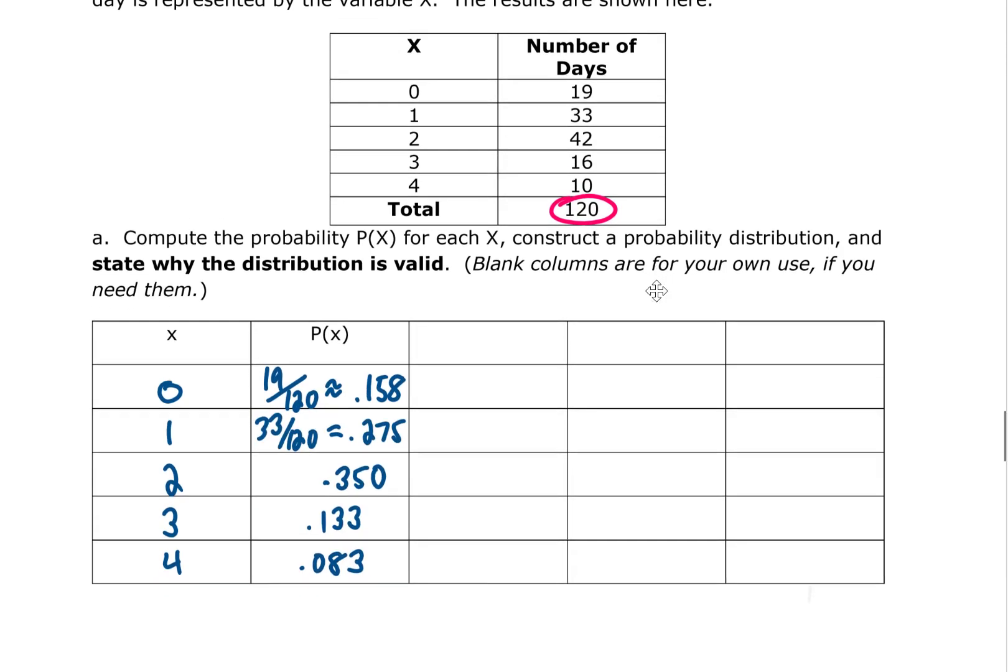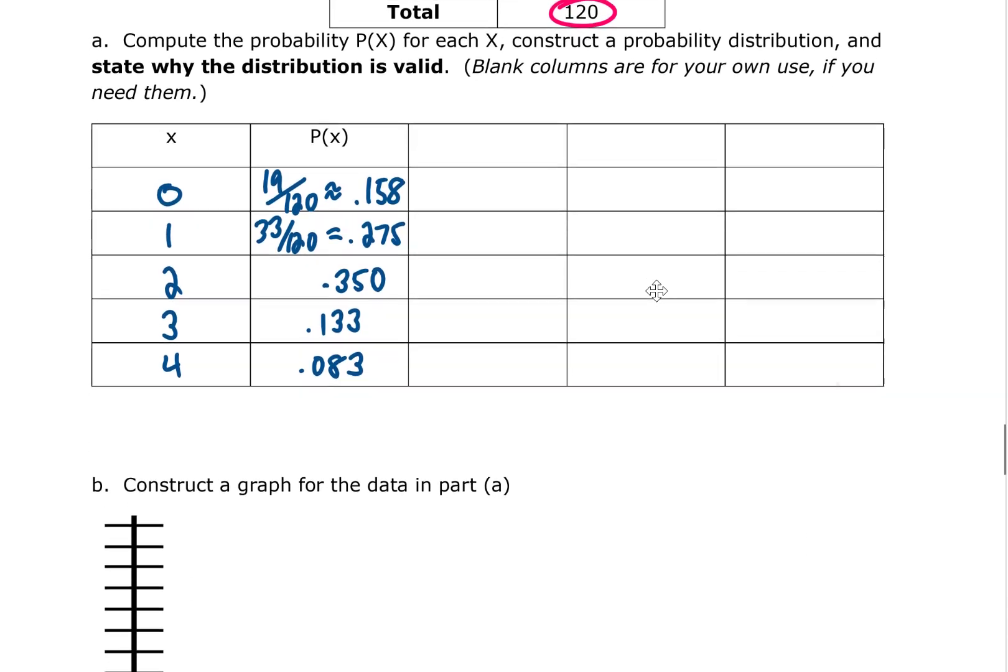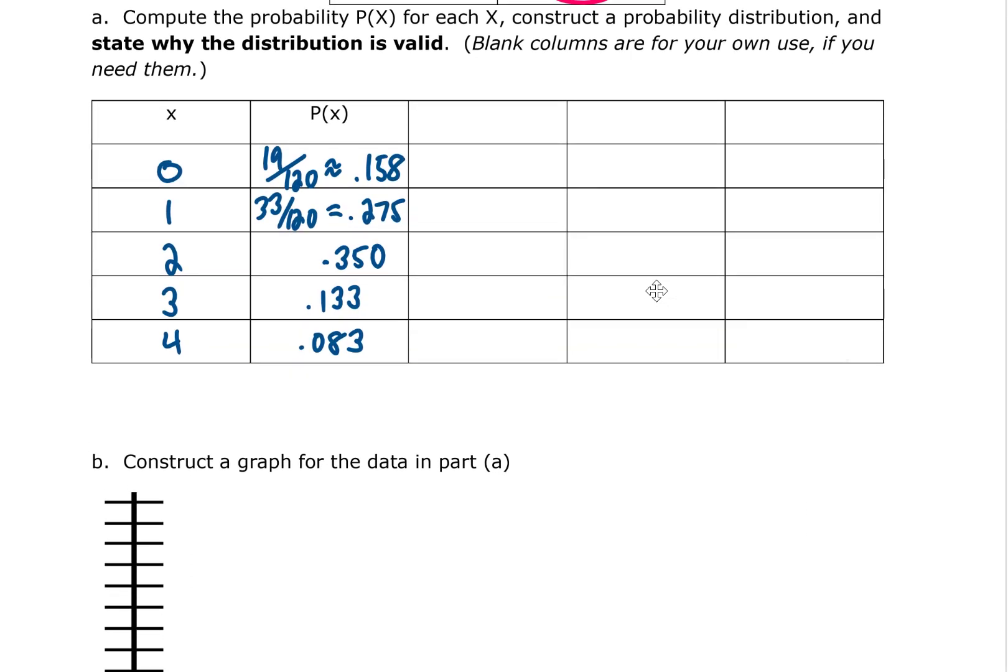I filled out the table. We should state why this probability distribution is valid. Well first of all notice that all of these probabilities are numbers between 0 and 1. We have no negative numbers and we have no numbers bigger than 1. Also notice that they add up to 1, or approximately 1. If we didn't do any rounding they would add up to 1.